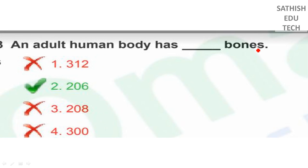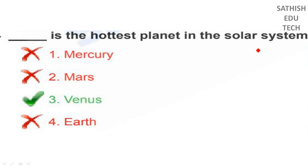The human body has bones. We will talk about the human body. The hottest planet in the solar system is Venus — also called Shukrudu — known as the morning star and the evening star.